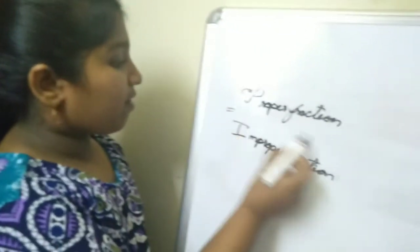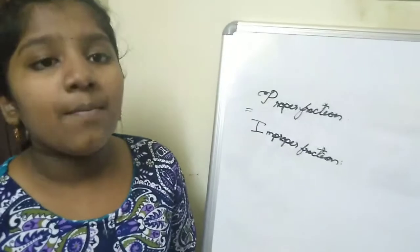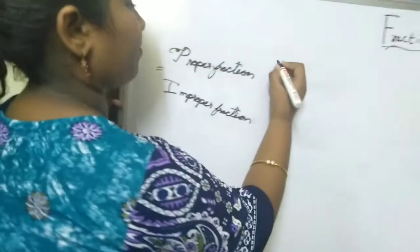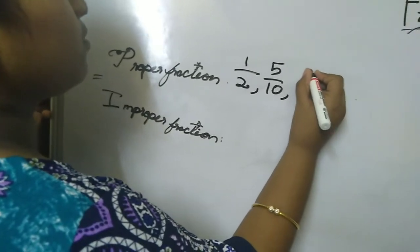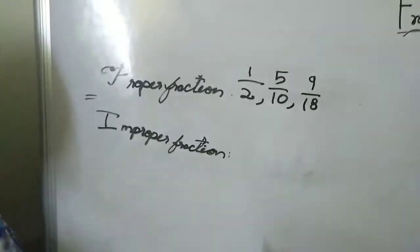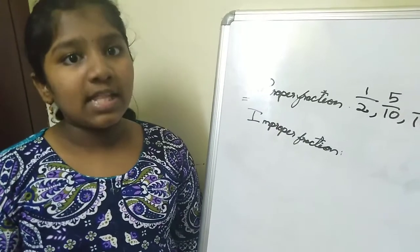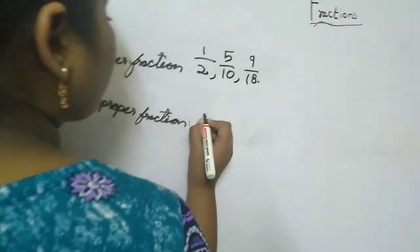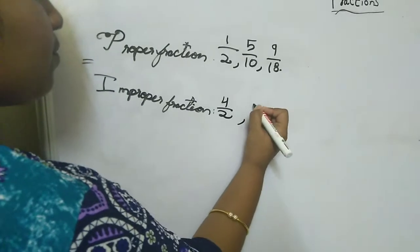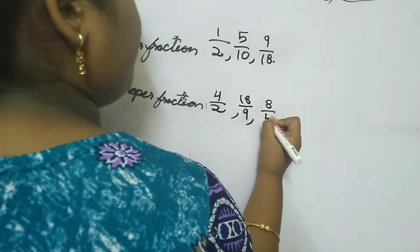Friends, now we will learn about proper fraction and improper fraction. A proper fraction means the numerator is smaller than the denominator. Examples of proper fractions are 1 by 2, 5 by 10, and 1 by 18. An improper fraction means the numerator is bigger than the denominator. Examples of improper fractions are 4 by 2, 18 by 9, and 8 by 4.